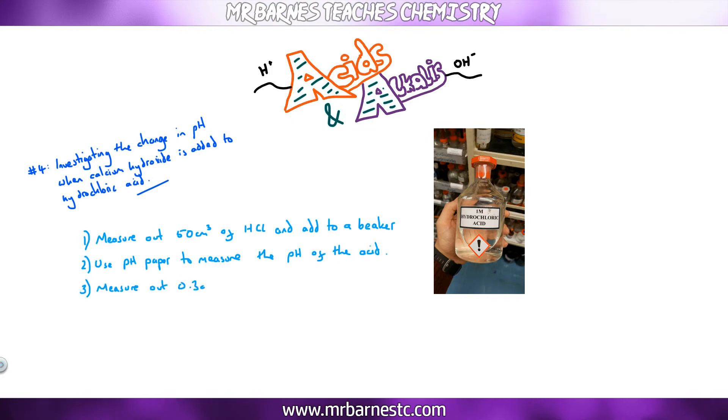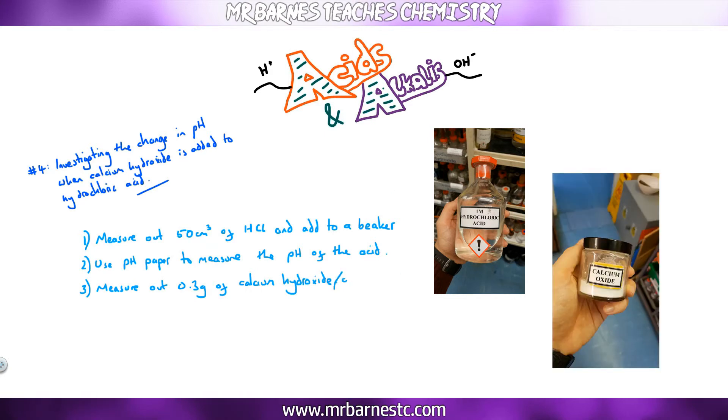Step three, measure out 0.3 grams of calcium hydroxide or calcium oxide and then add it to the hydrochloric acid. Stir it, make sure it's fully reacted. Once you've done that, remeasure the pH. You're going to do these steps, steps three to six, until you've added around three grams. In other words, until the pH has gone high enough.